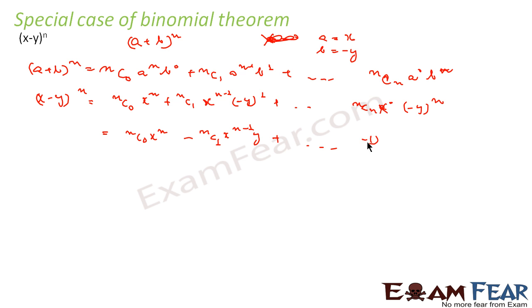Continuing to the last term, we get (−y)^n, which becomes (−1)^n · ncn · y^n, since x^0 = 1.